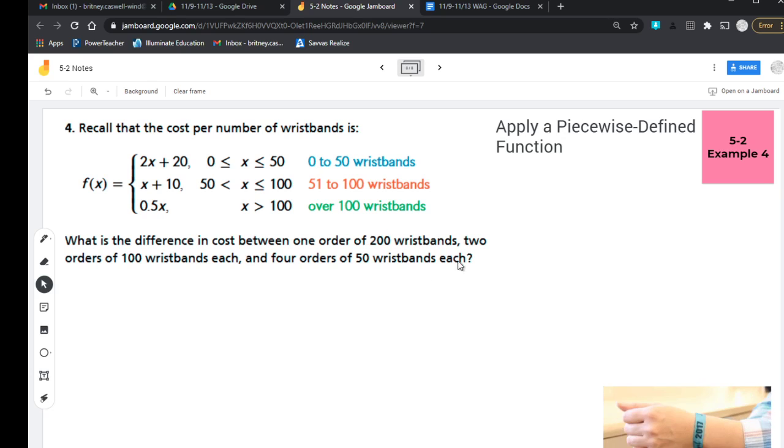So let's go ahead and let's try that. So if I'm ordering 200 wristbands, I'm looking at the x is greater than 100 range. So that's like the green range here. So I'm going to find f(200). So again, because my x value is more than 100, I'm using this bottom tier. And so where the x is in that equation, I'm going to plug in a 200.